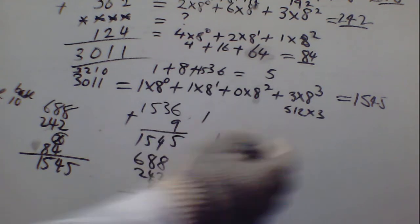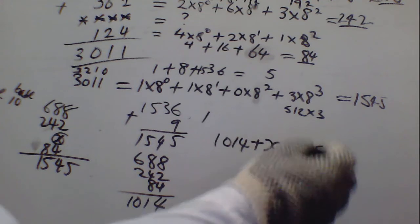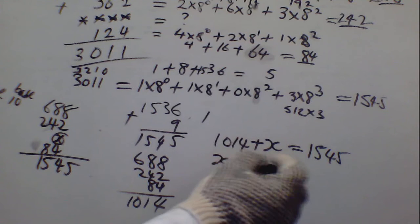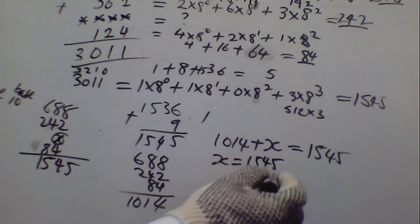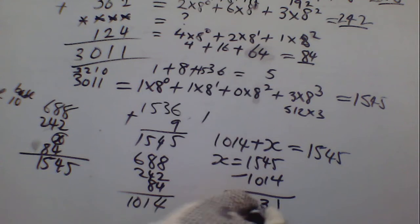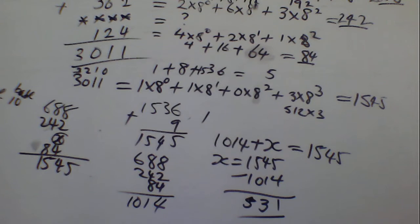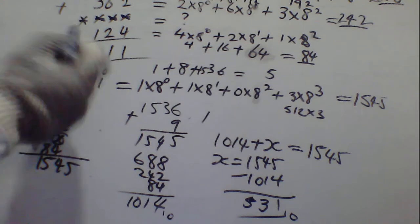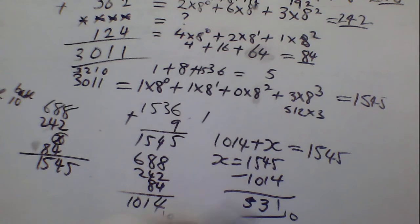Plus 1.1.4, plus 1.1.2, which gives us 1545. So we make S the subject. We have 1545, minus 1014, this gives us 531. So we get 531, and that one is in base 10. So the value we are looking for — S — equals 531 in base 10.